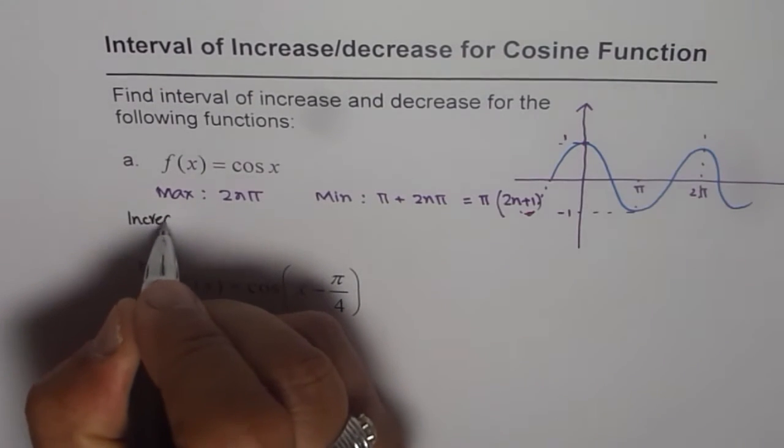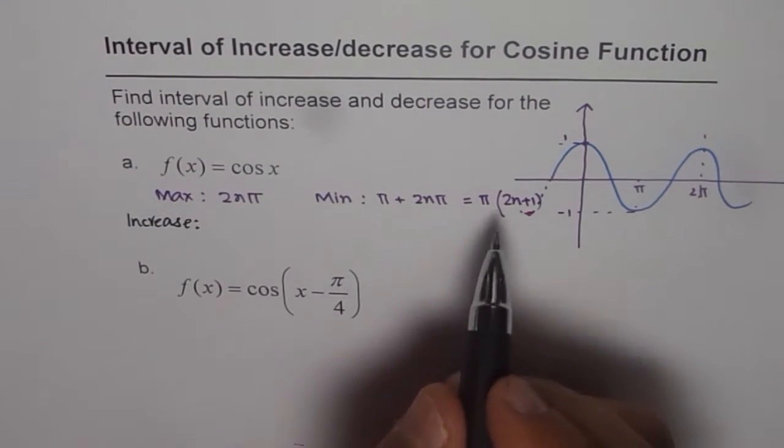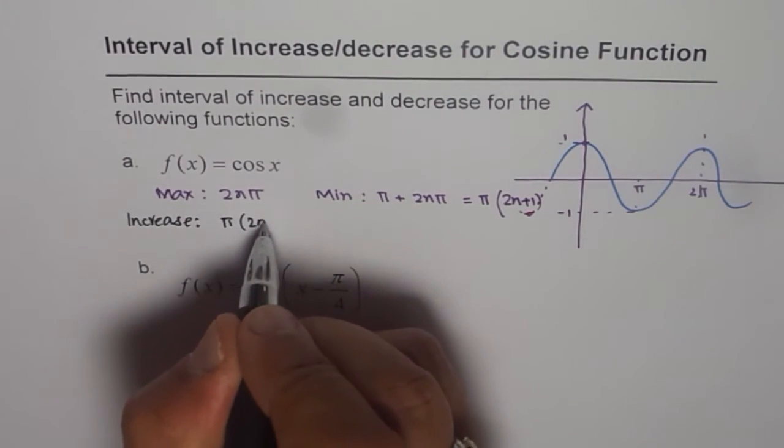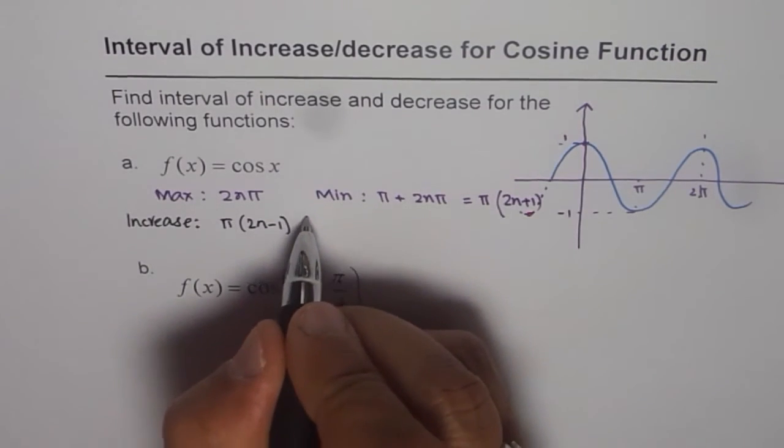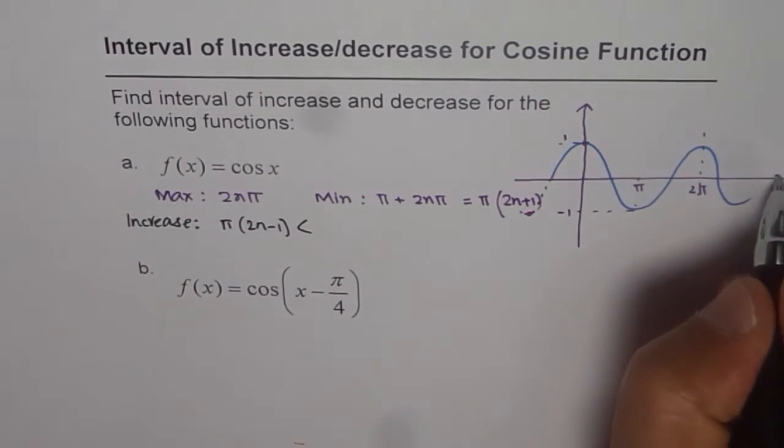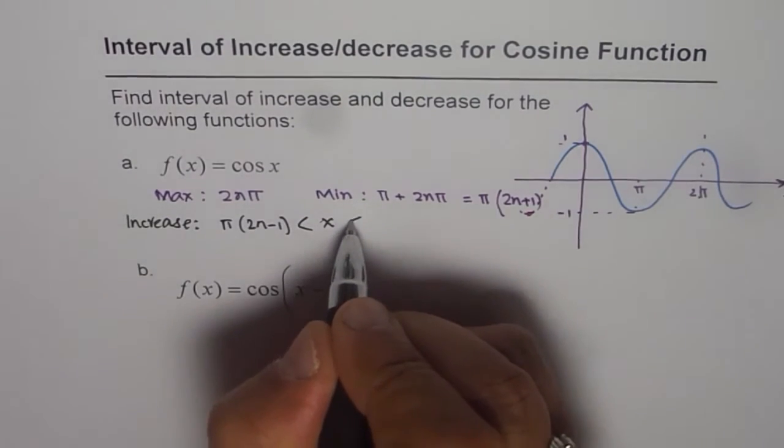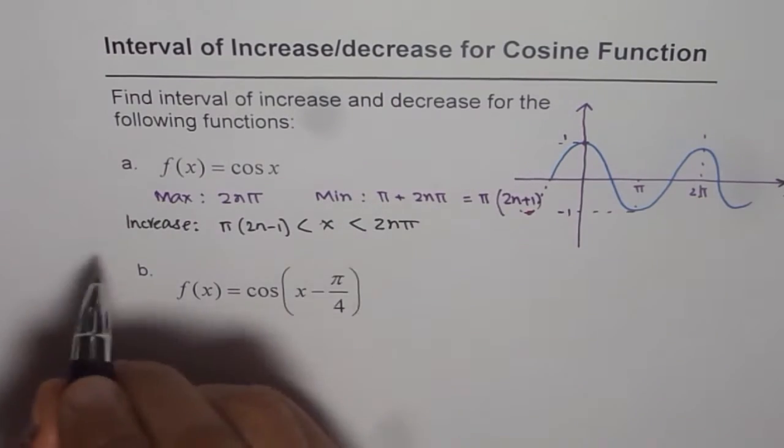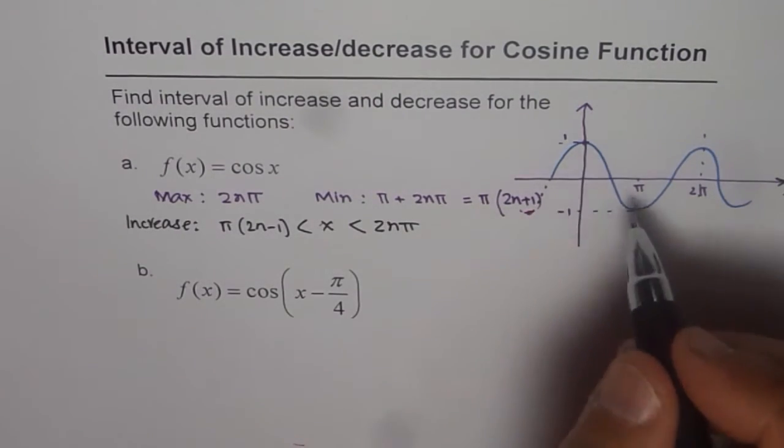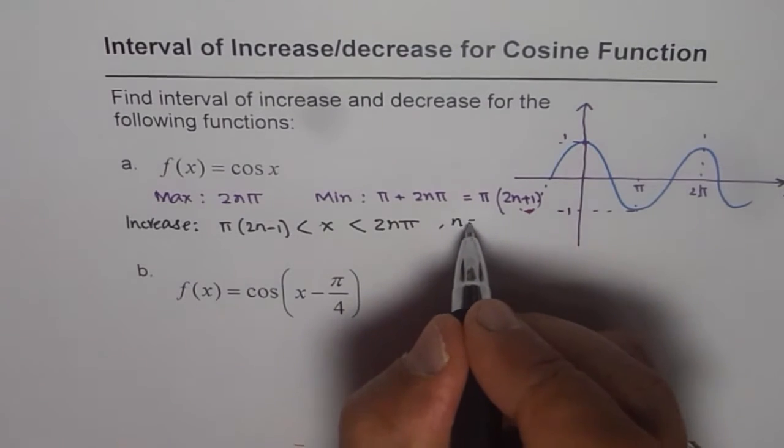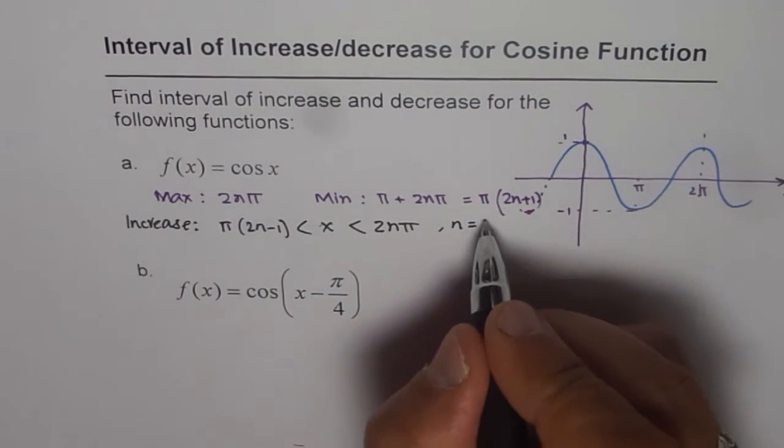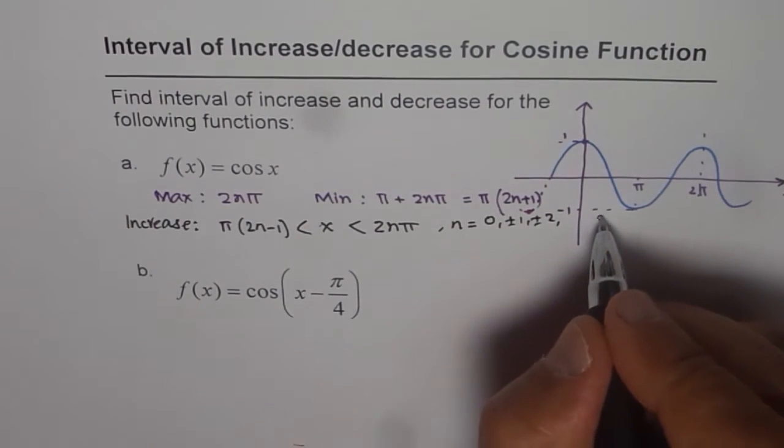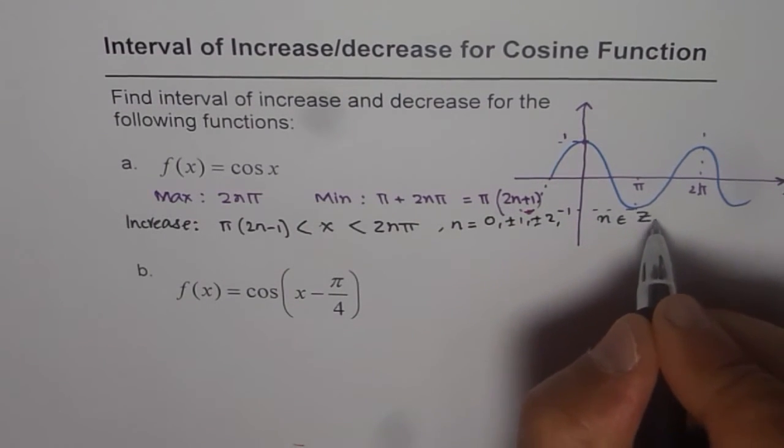the interval is from pi, or let me write this as pi times 2n minus 1, where x is between, let's say this is x for us, 2n pi. So that is the interval of increasing, from here to here, from there to there, where n equals a set of integers. So we can say 0 plus minus 1 plus minus 2, or we can say n belongs to a set of integers.